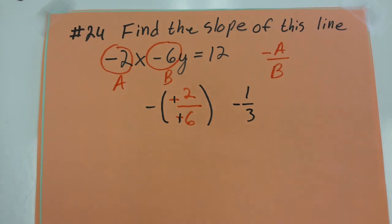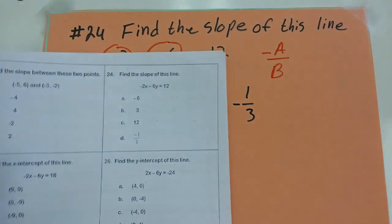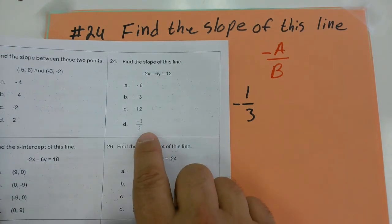So my answer to number 24 on the PERT practice test should be negative 1 third. And there it is, it's choice D.